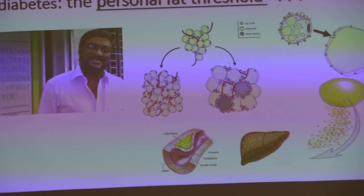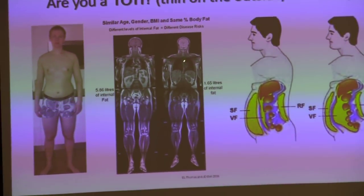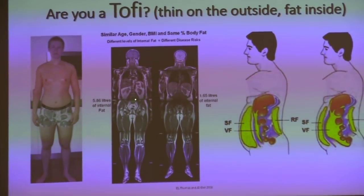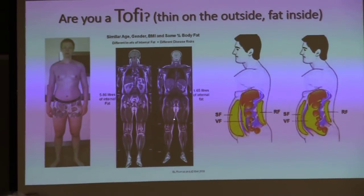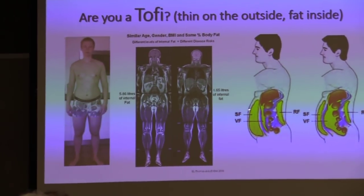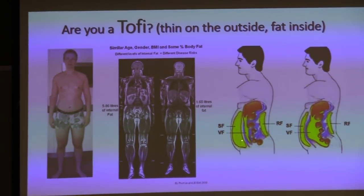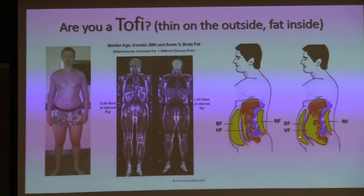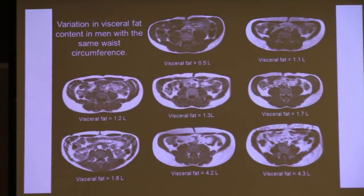Their cells go hypertrophy first — they get overstuffed rather than getting hyperplasia. They don't get as much subcutaneous fat; instead they get visceral fat and ectopic fat. Here is an MRI diagram: these two people are of identical weight. This person has a lot of internal fat, this person has much less. The person with more subcutaneous fat is healthier; the one with less subcutaneous fat and more visceral fat is not as healthy.